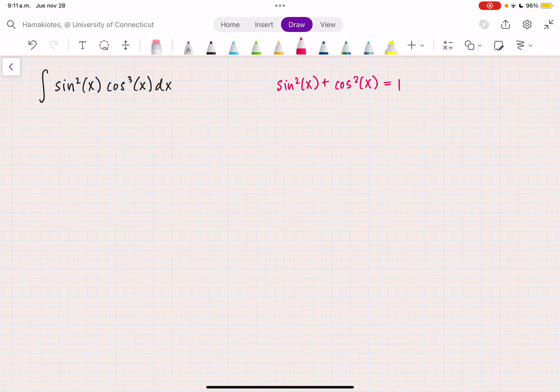If I have sine to an even power and cosine to an odd power, I'm going to want to rewrite this integral as the integral of sine squared of x times cosine squared of x times cosine of x dx. All I've done here is break up cosine cubed into cosine squared times cosine.